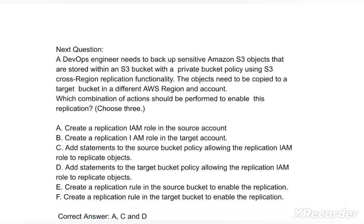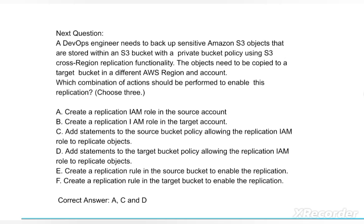Next question: A DevOps engineer needs to back up sensitive Amazon S3 objects stored within an S3 bucket with a private bucket policy using S3 cross-region replication functionality. The objects need to be copied to a target bucket in a different AWS region and account. Which combination of actions should be performed to enable this replication? Option A: Create a replication IAM role in the source account. Option B: Create a replication IAM role in the target account. Option C: Add statements to the source bucket policy allowing the replication IAM role to replicate objects.